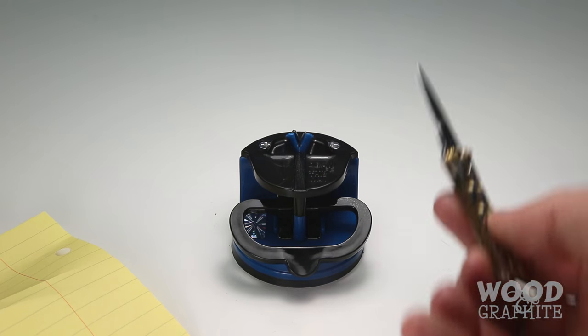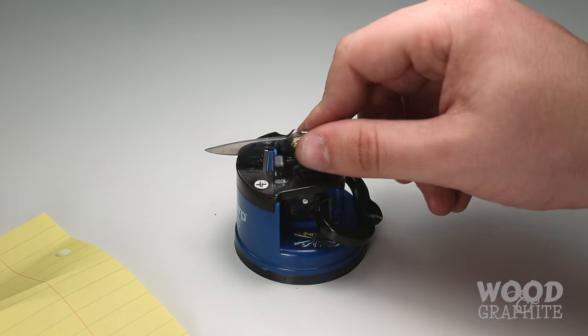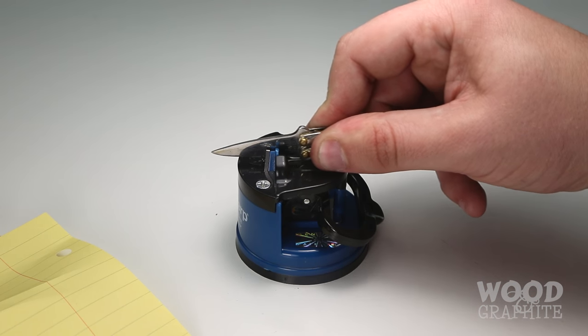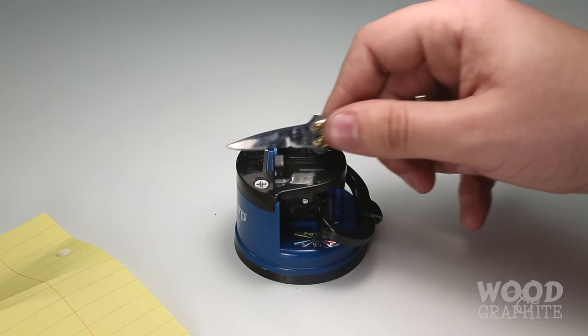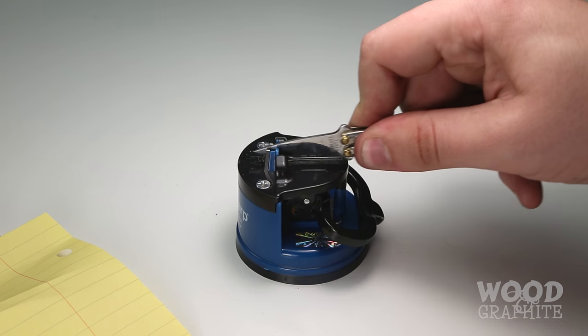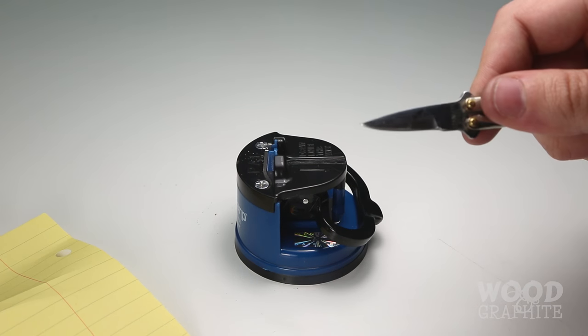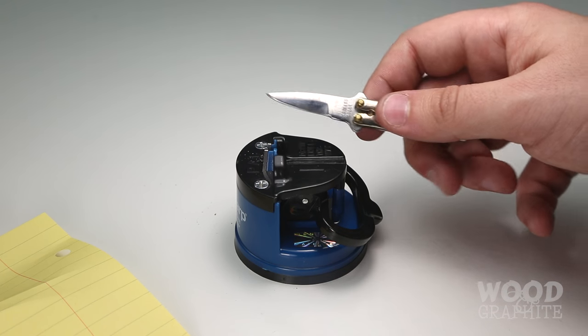And let's see what I can do. In fact, I'm going to spin this around so you can see the action from the side. Start at the base of the knife. One. Two. Three. Four. I can already see it's getting sharper.